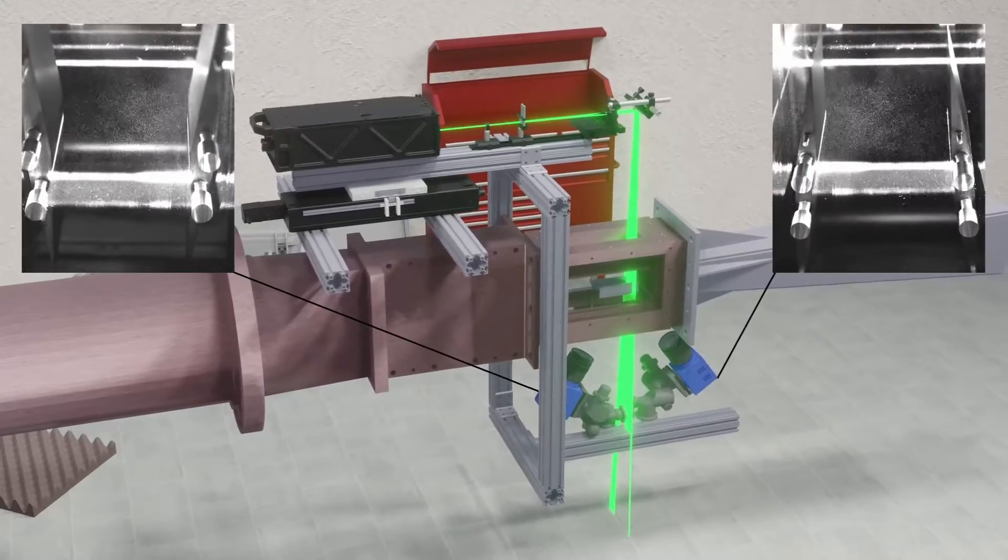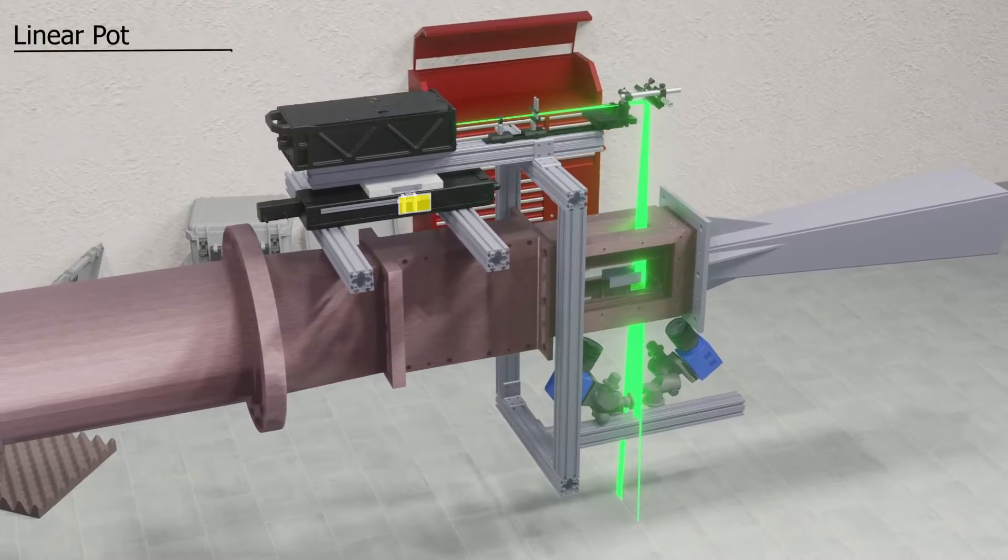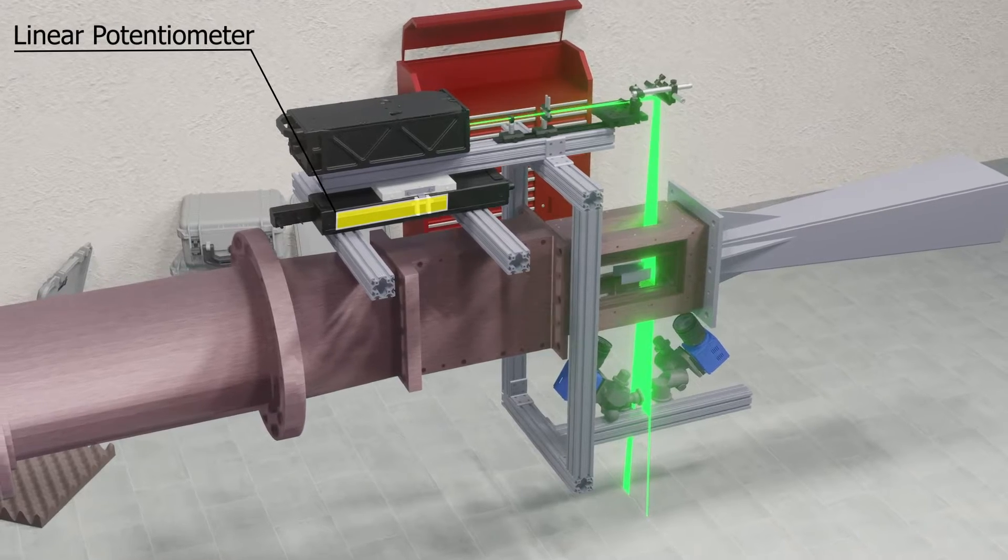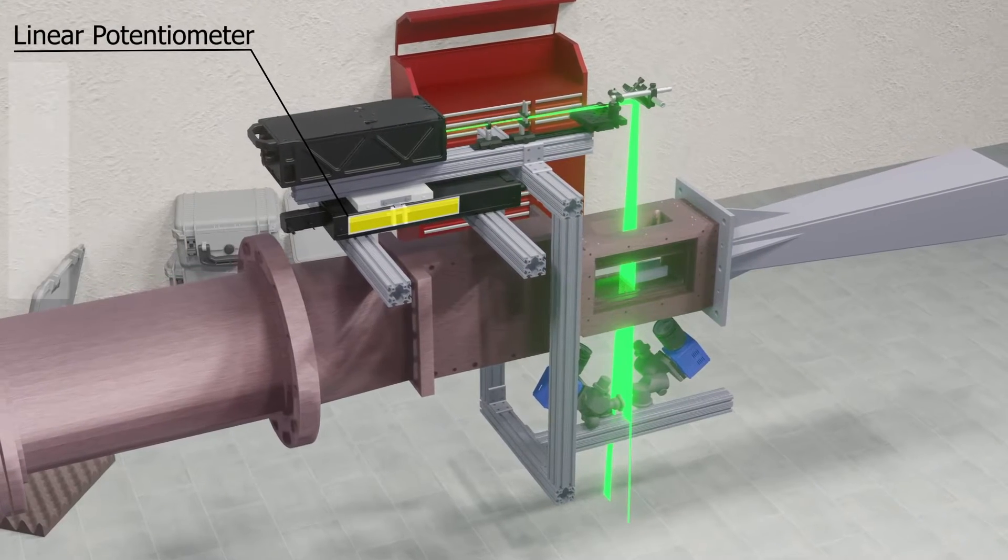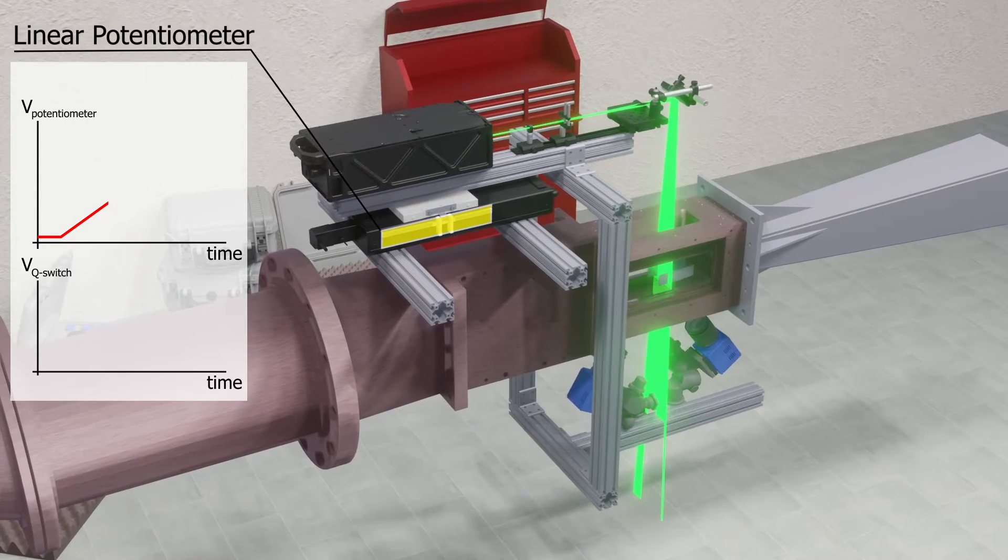To find out where the planes are located we equip the traverse mechanism with an accurate linear potentiometer which gives us a voltage proportional to the distance traveled. We acquire this voltage with a data acquisition device along with the pulses from the laser Q-switch.